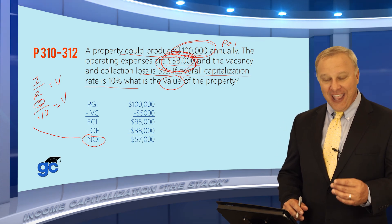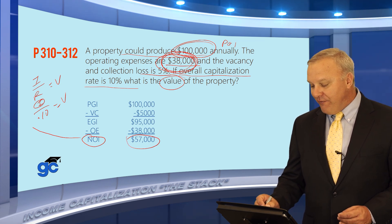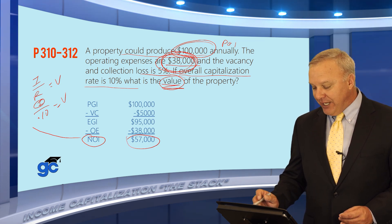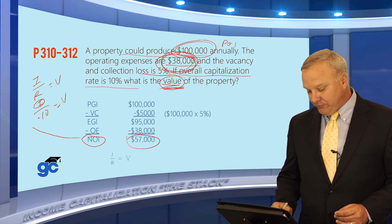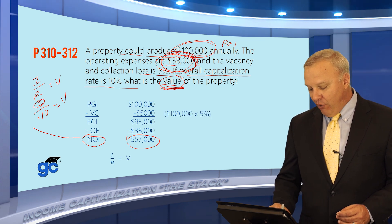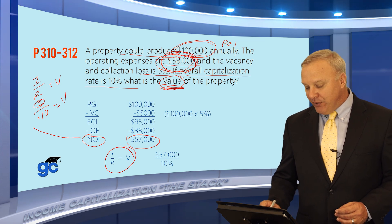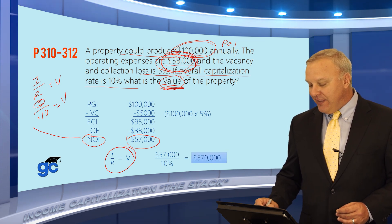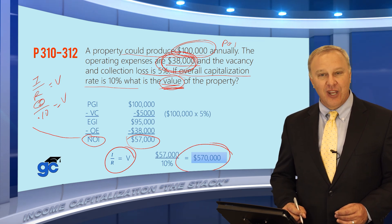Make sure you answer the whole question. The question did not ask what the NOI is — it asked what is the value of the property. So we take the IRV formula, plug the NOI of $57,000 in as the I, the rate is 10%, divide, and you will find the answer is $570,000.